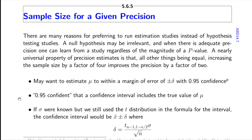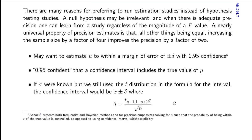A better way to calculate sample size is to say: we want to estimate the unknown mean with a margin of error of plus or minus delta, regardless of what the unknown mean is — no need to talk about null or alternative hypothesis, just the margin of error. The margin of error is half the width of the confidence interval. The sample size needed to achieve a margin of error of delta is: take the t critical value times sigma divided by the margin of error delta, square that ratio, and that gives you n.